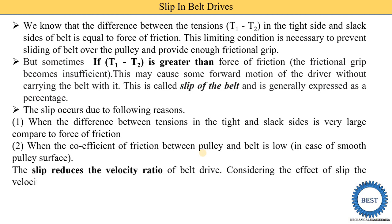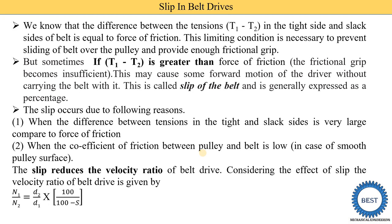Slip reduces the velocity ratio of a belt drive. When slip occurs, the velocity ratio is reduced, and considering the effect of slip, the velocity ratio is given by: N1 upon N2 equals D2 upon D1 multiplied by 100 divided by (100 minus S). Here S is the total percentage of slip, which is the summation of S1 plus S2, where S1 is the slip between the driving pulley and the belt, and S2 is the slip between the driven pulley and the belt. S is expressed as a percentage.